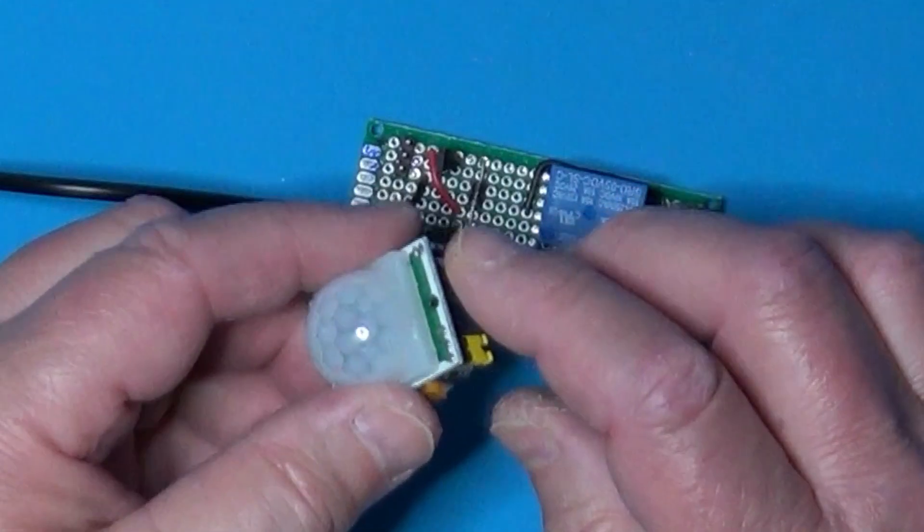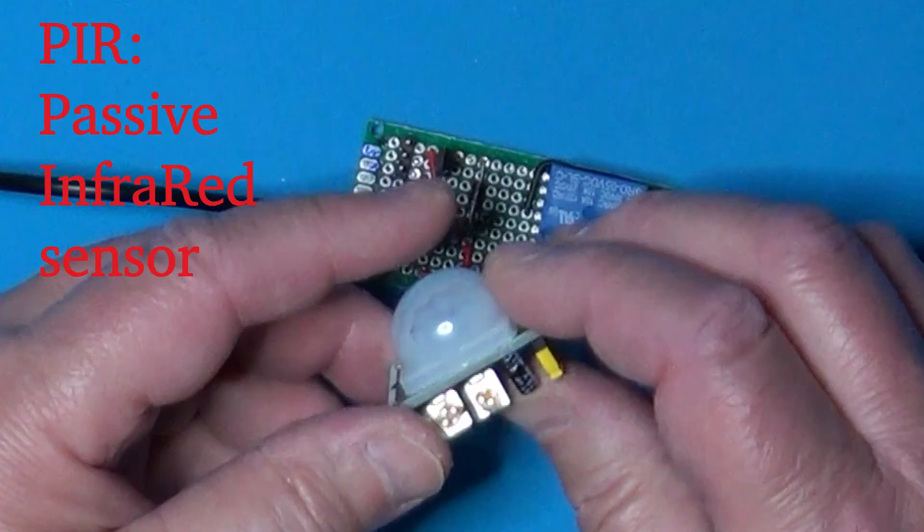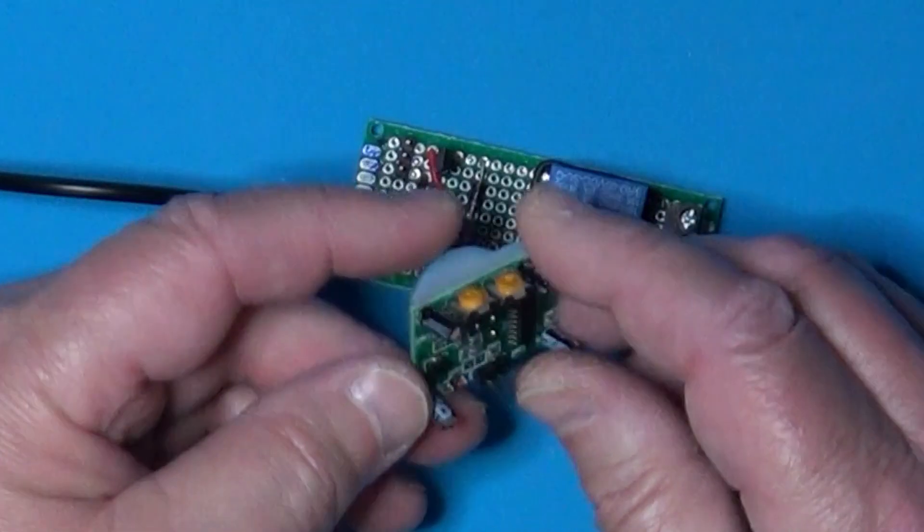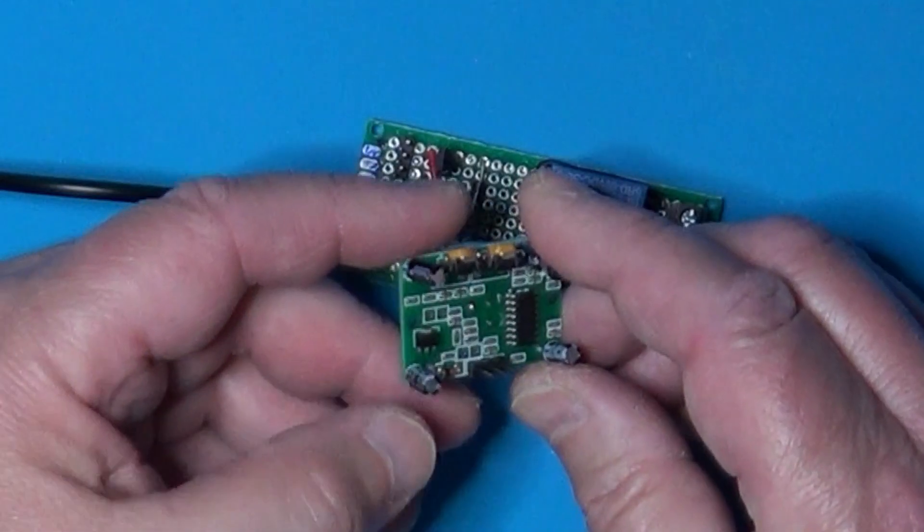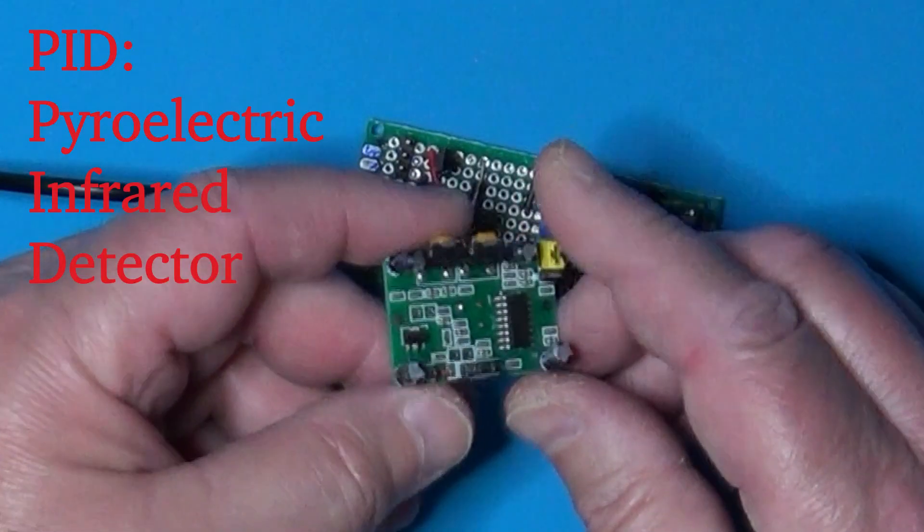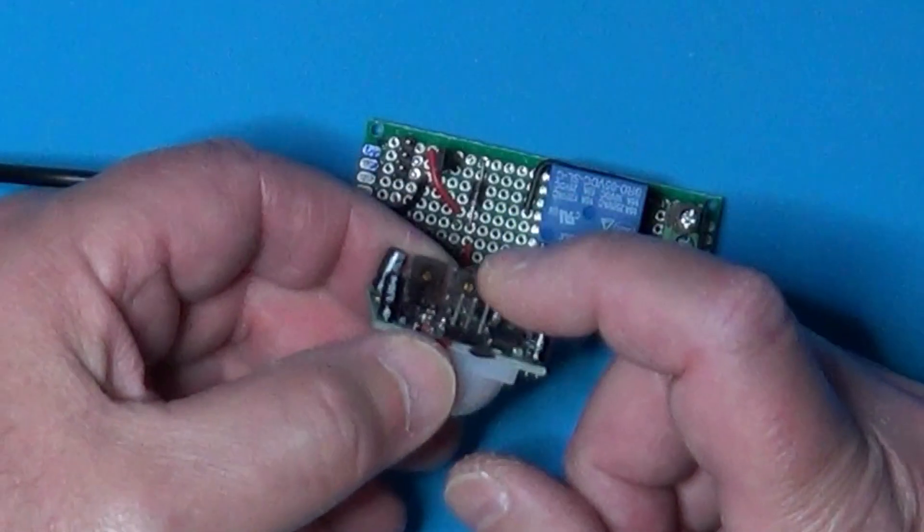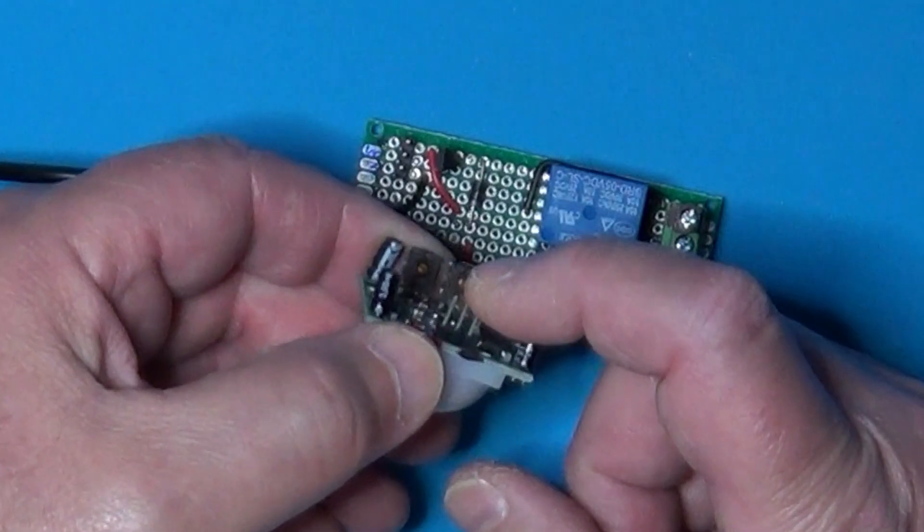The core of this device, technically called an occupancy sensor, is a PIR, or passive infrared sensor. I have a version of it called HCSR501 that puts together a pyroelectric infrared detector, or PID, with a bunch of other electronic components.